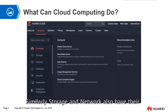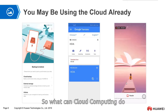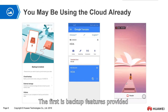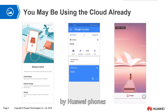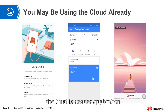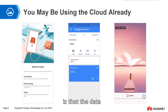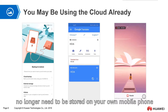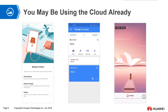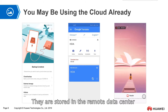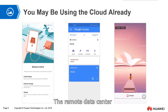Similarly, storage and network also have their own subcategories. What can cloud computing do? Here are some examples. The first is backup features provided by Huawei phones. The second is Google Translator. The third is a reader application. The common feature of these three applications is that the data no longer needs to be stored on your own mobile phone — it is stored in a remote data center, which is generally considered as the cloud.